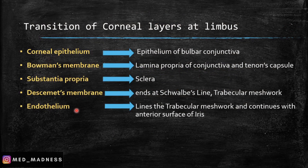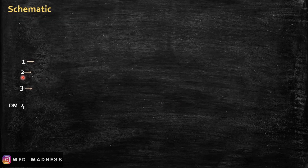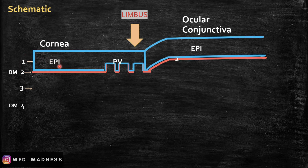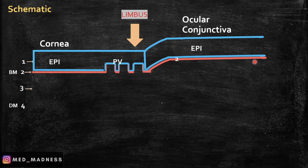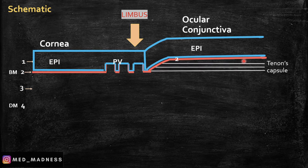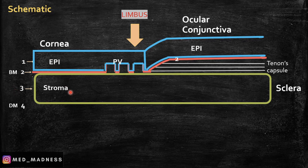These five layers of the cornea are going to undergo transformation into these structures at the limbus. In order to have a good understanding and better memorization, I am going to draw a rough diagram and then we will go over the histology slide. The first two layers — the epithelial cell layer and the Bowman's membrane — transform as follows: at the limbus, the epithelial cell layer continues as the epithelial layer of the ocular conjunctiva. The Bowman's membrane continues as the lamina propria of the conjunctiva and also as Tenon's capsule, which is the outer covering of the sclera. The third layer, the stroma or substantia propria, continues as the sclera.